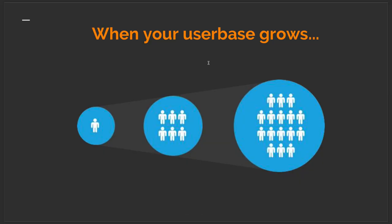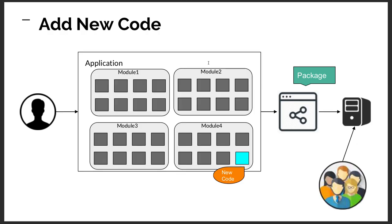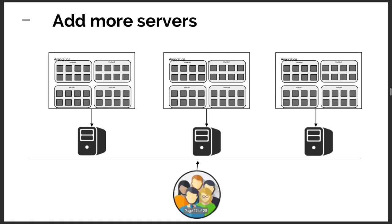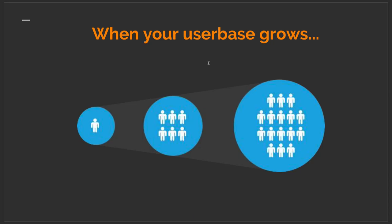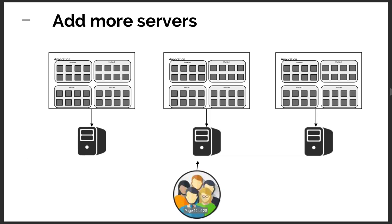Whenever new code is added in a monolith, you have to identify the impact on other modules. For a new developer, understanding the whole flow is challenging — whereas with microservices, if you only work on an auth service you just need to understand authentication, or for a notification service just that specific module. In a monolith you must understand the entire module structure, dependencies, and coupling. As your user base grows, you just keep adding servers and deploying the same monolith instance, which creates deployment strategy challenges.